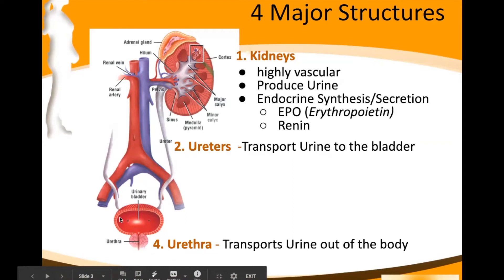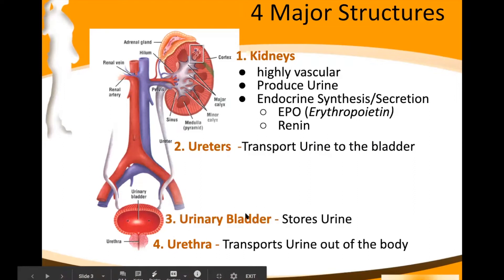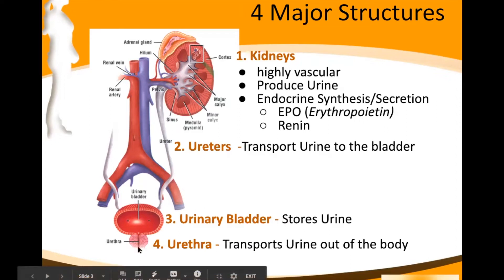The ureters are long, collapsible tubes that drain the urine product from the kidneys to the bladder. The bladder is made up of stretchy transitional epithelial tissue that allows it to expand. Its job is simply to hold the urine. Then the urethra is the tube that exits the body — you can identify this as a male diagram because the prostate is visible around the urethra.